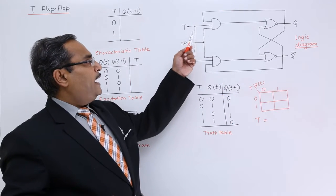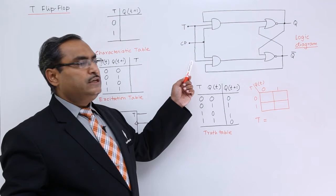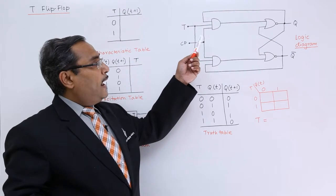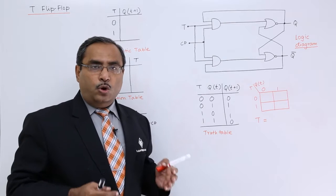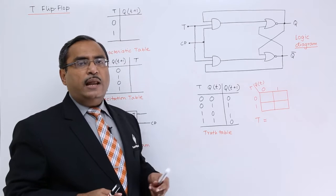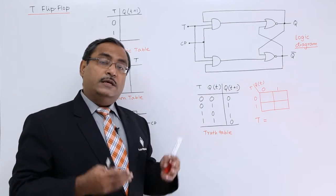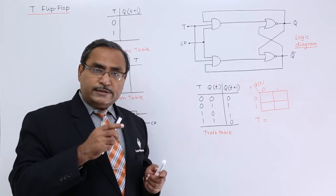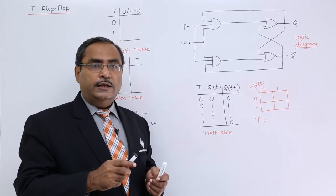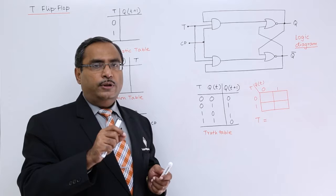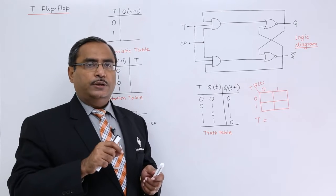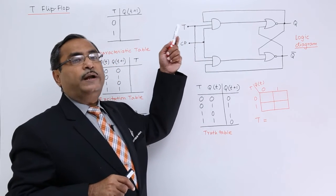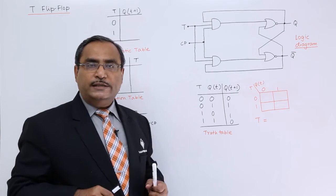Here you can find that J and K, these two terminals are shorted and it has been labeled as T. This particular flip-flop, when T has the value 0, means we are providing J and K equal to 0. We know that in case of JK, if we have 0,0 then output will be Qt. So when T is 0, the output will not get changed.